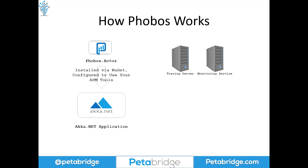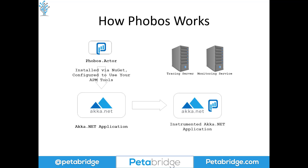So after you buy a license for Phobos, you can install it into your existing Akka.NET applications using a small amount of configuration code. Once your Akka.NET application starts up, you'll automatically begin recording trace and metric data from your normal actor interactions, as well as from ASP.NET MVC controllers or SignalR hubs that communicate directly with Akka.NET.